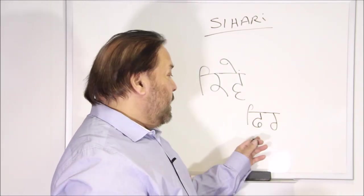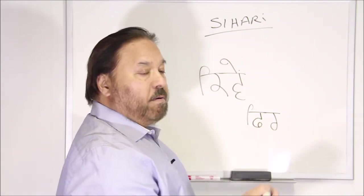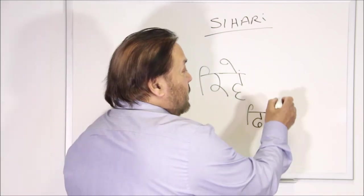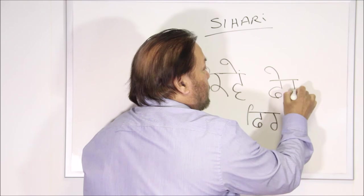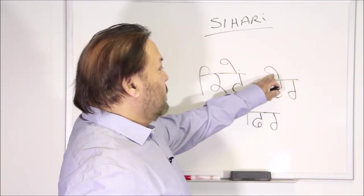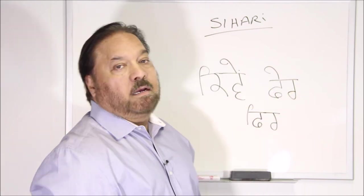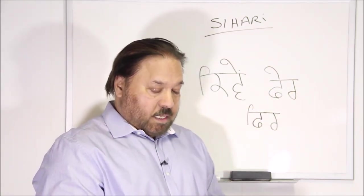If I want to write down fair, Sihari, fa fa, ra ra, Sihari. But if I want to write down fair, then I have to fa fa Lama and rara. This is fair.